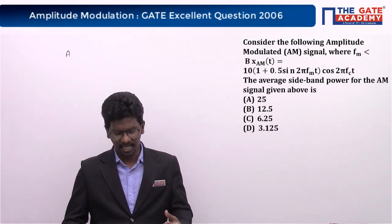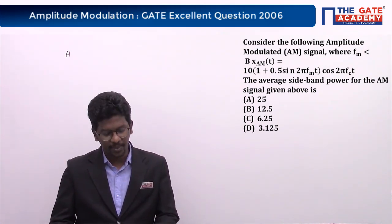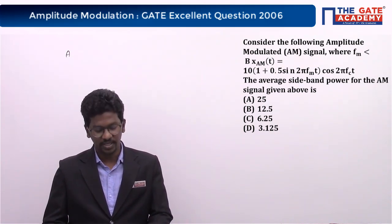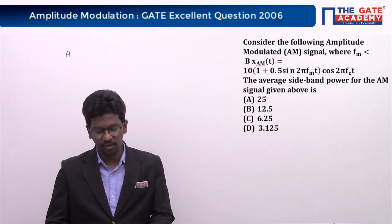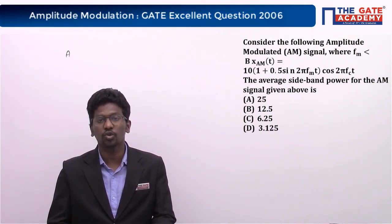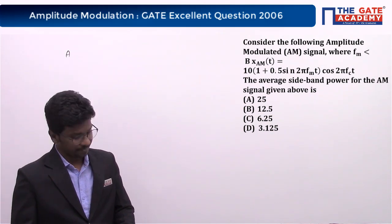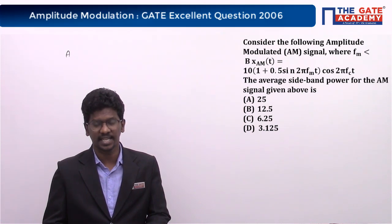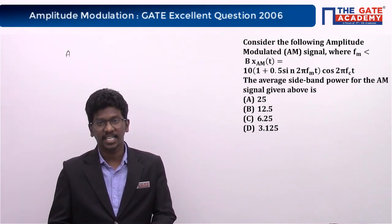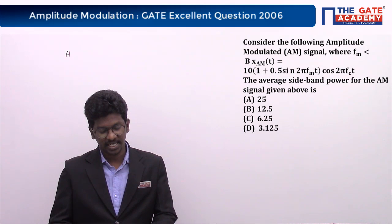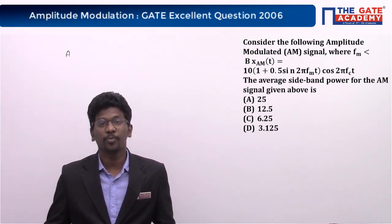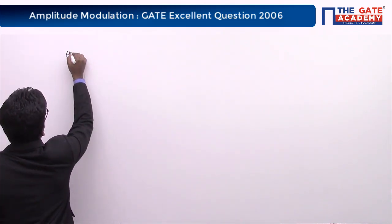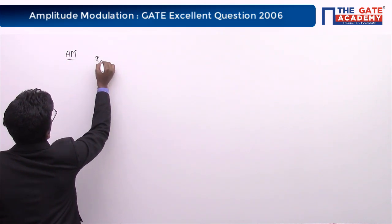The common data given is: consider the following amplitude modulated signal x_AM(t) = 10 × (1 + 0.5 sin(2π f_m t)) × cos(2π f_c t). The first question asks: the average sideband power for the given AM signal is — option A: 25, option B: 12.5, option C: 6.25, option D: 3.125.